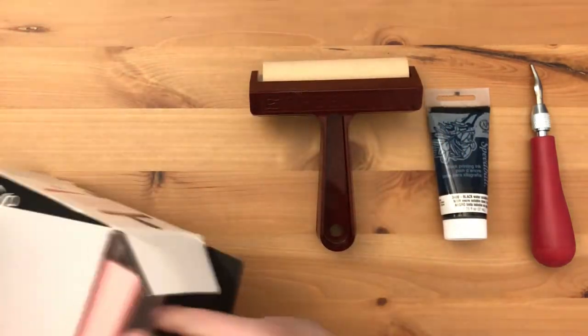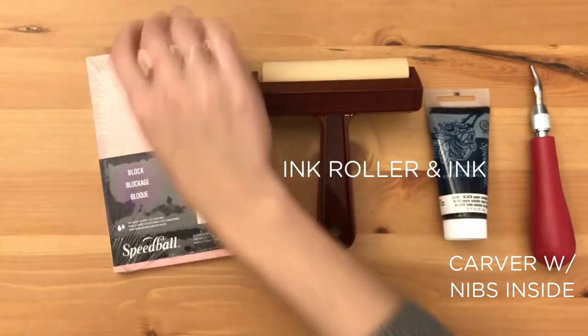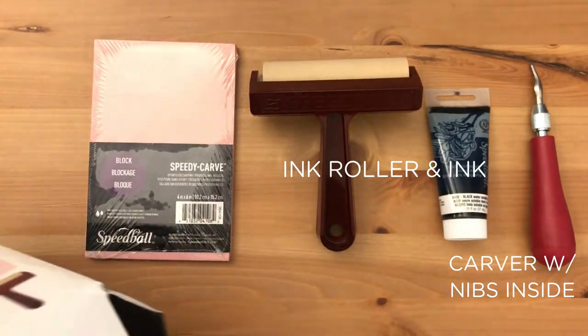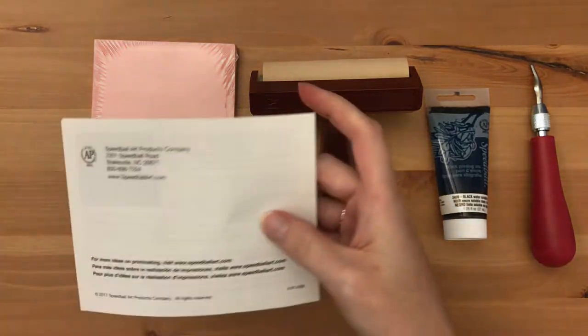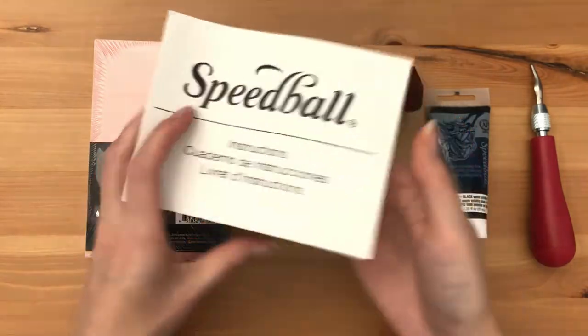In here we have the carver with three nibs, ink, an ink roller, and the carving block. And these instructions which are literally one paragraph long.